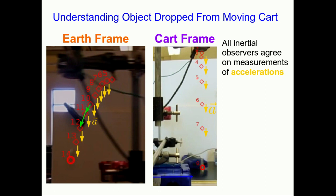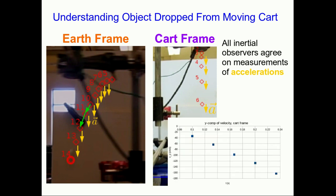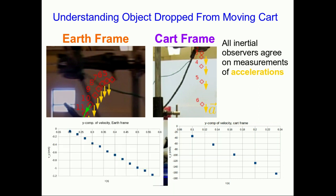We can also see, if we look at the y component of velocity in the cart frame, that it gives a nice straight line graph. That tells us the acceleration is constant. Similarly, in the earth frame, if we look at the y component of the velocity versus time, we also see a straight line. So both frames agree that the acceleration is constant.